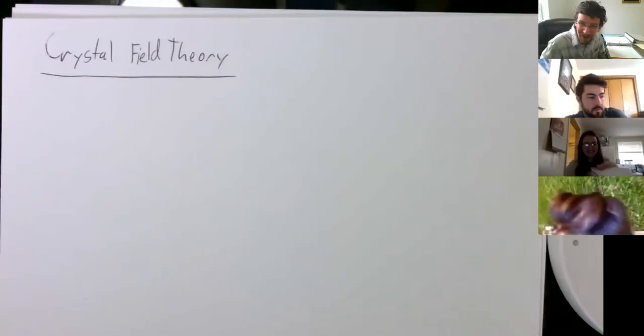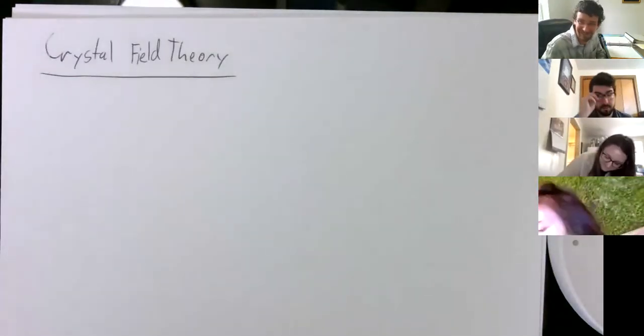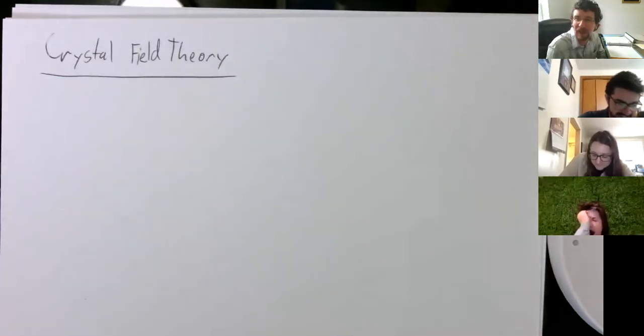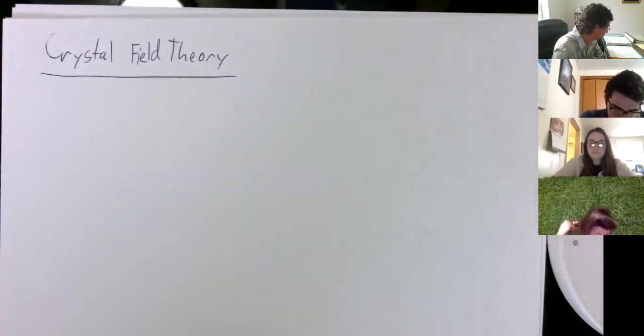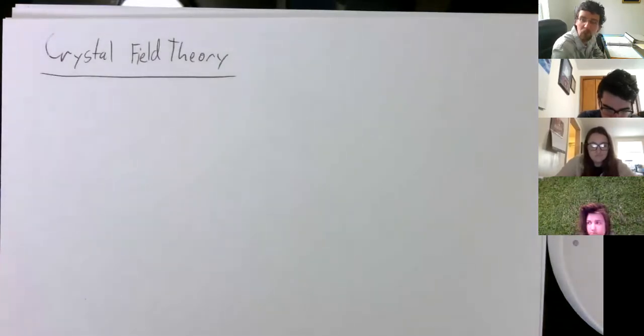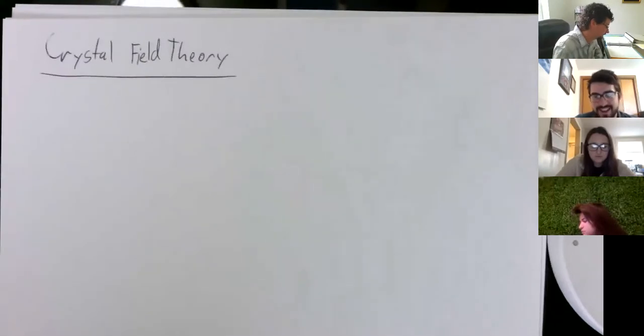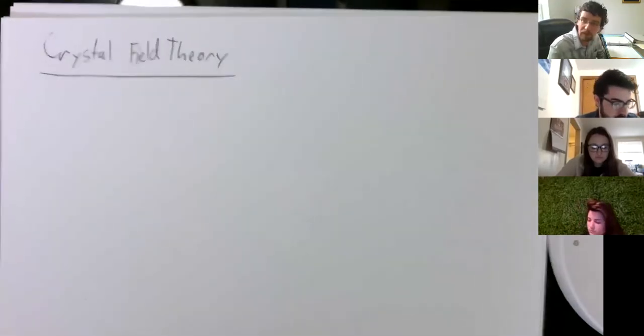Last time we finished talking about crystal field theory. We're done — one more week, two more classes, and one test. What is crystal field theory, or what is the purpose of it? It's a way to talk about structures, talk about if the system is magnetic or not, and to look at some experimental observations. So how is this theory constructed?